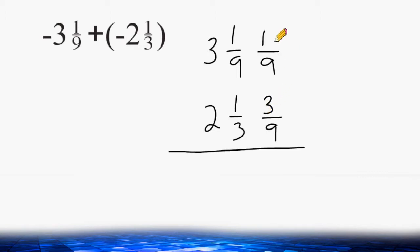So we are adding 1/9 to 3/9, which is a total of 4/9. And then we can just add the whole numbers together, and 3 plus 2 is 5.